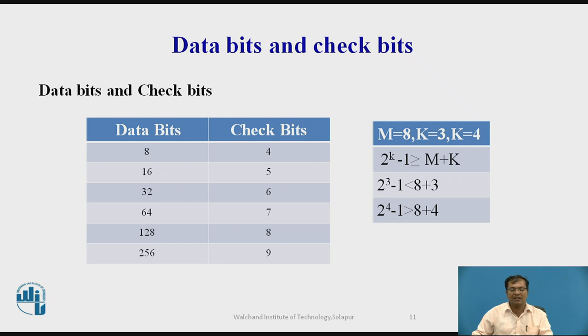Initially let us consider k which is equal to 3. If you substitute these values in this equation, 2 raised to k minus 1 which is greater than or equal to m plus k. So if we substitute m equals 8 and k equals 3 in this equation, it leads to less than 8 plus 3. Now it is better to take next value which is k equals 4. If we put 4 in this equation, it satisfies which is greater than 8 plus 4. So according to this formula, it is greater. And hence it requires 4 bits of check bits for 8 bit data.